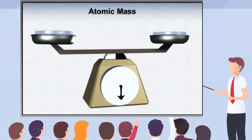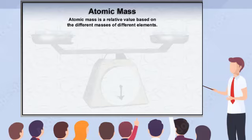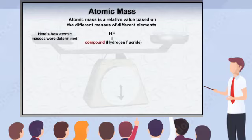Atomic mass is a relative value, meaning that it is based on differences between elements rather than a value actually measured for a single element. Atomic masses are determined by comparing the ratio of atoms in a compound with the weight of each element's atoms remaining after the compound is broken down into its constituent elements. For example, hydrogen and fluorine combine to form hydrogen fluoride in a 1 to 1 ratio.